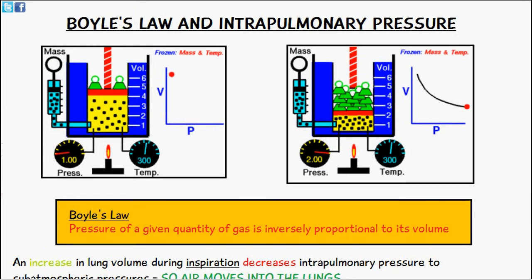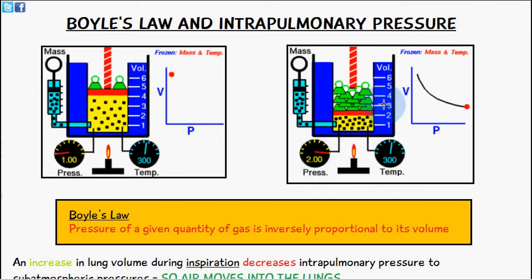Bringing it back to Boyle's law, this image here shows a perfect example of how Boyle's law actually works. You can see we've kept the temperature and the mass constant, but as we increase the volume you can see how the pressure pretty much doubles — so we've halved the volume and doubled the pressure — showing how they are inversely proportional, because as one increases the other decreases.